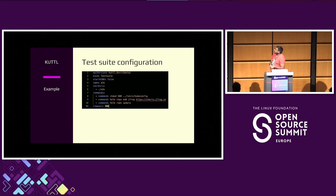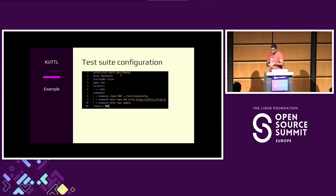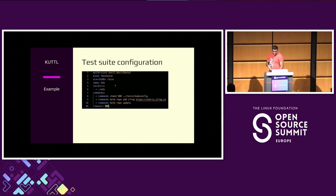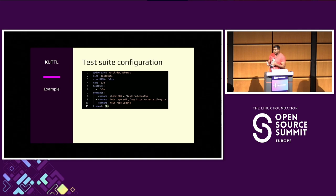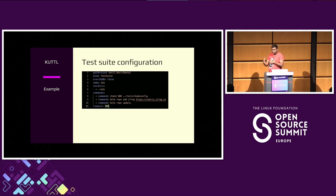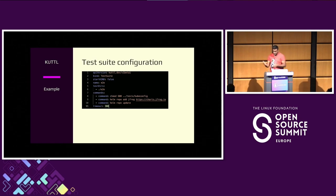Cuttle has three main configurations. One is a test suite, which is a combination of test steps. The API version is kuttle.dev/v1beta1 — it's a CRD (custom resource definition) and the kind is 'TestSuite'. You can see 'startKind' here: using kind with a local Docker desktop or Rancher desktop to run tests. Set startKind as true to run using a kind cluster locally. The name is anything you choose, test directory is where your tests are, and you can configure commands with a timeout — say 300 seconds.